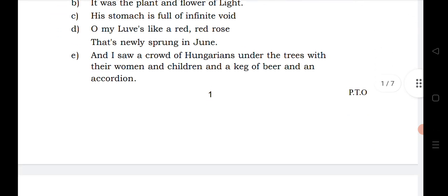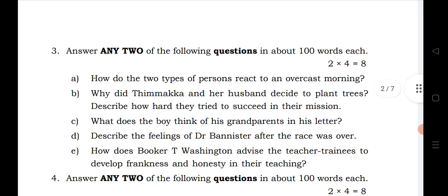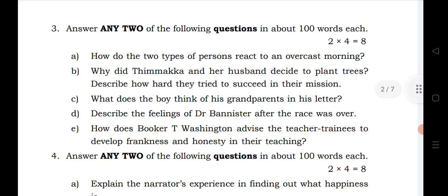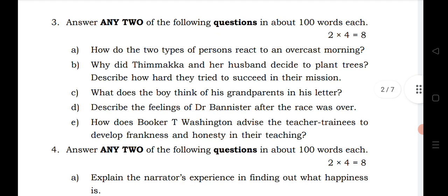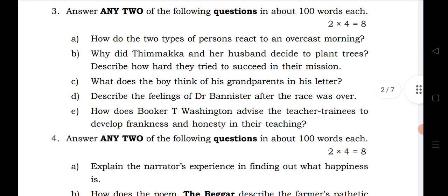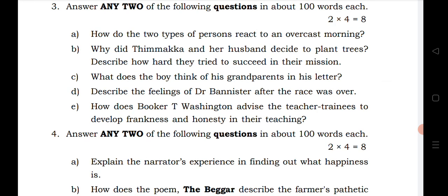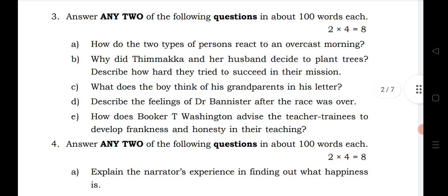Question 3 is the question-and-answer session, also called paragraph questions. Out of five questions you have to answer two. The first question A is from 'Two Sides of Life,' B is from 'Green Champion,' C is from 'Father Dear Father,' D is from 'First Four Minutes,' and E is again from 'Two Sides of Life.' For paragraph questions, 'Two Sides of Life' is again very important.